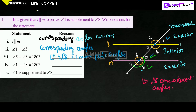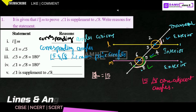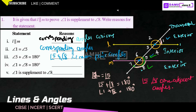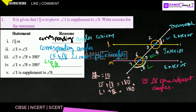Therefore, angle 1 plus angle 8 equals 180 degrees. Since angle 1 equals angle 5, we substitute angle 1 in place of angle 5 in the linear pair equation. So angle 1 and angle 8 are supplementary angles.